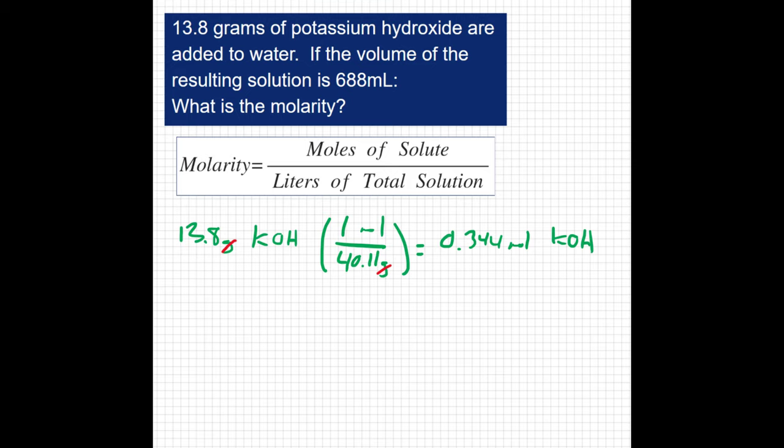Now I have to divide that by liters of solution. So I'm given 688 milliliters of solution. I'm going to want to convert that to liters, so that's 0.688 liters of solution.